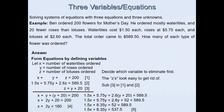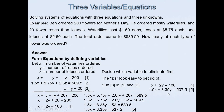Looking at equations 4 and 5, we now have two equations with two variables. It's easiest to eliminate x. Equation 4 has coefficient 1 for x and equation 5 has 1.5, so if we multiply equation 4 by 1.5, the coefficients of x will match and we can subtract to eliminate x and solve for y.